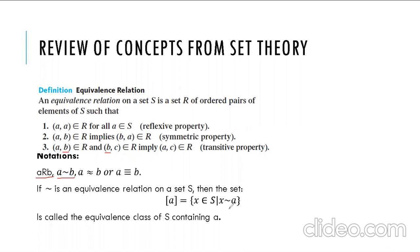If this is an equivalence relation on a set S, then the equivalence class of a fixed element a consists of all those elements x of S which are related with a. This set is called an equivalence class containing a. It always contains a because the relation is reflexive — so a is always related to itself — and hence any equivalence class always contains the element a itself.